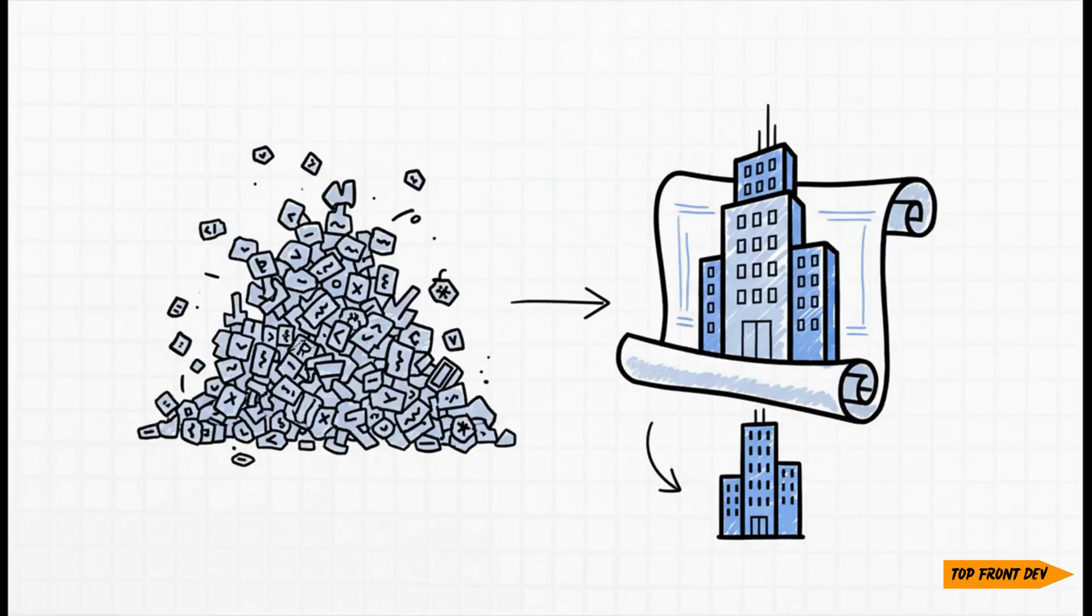And that is the absolute key. A great system is kind of like a great building. You would never start pouring concrete for a skyscraper without a super detailed blueprint, right? So why would you start writing thousands of lines of code without a solid system design? This plan is your guide to building something that actually works.